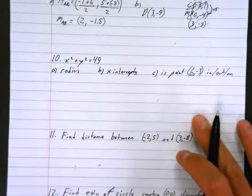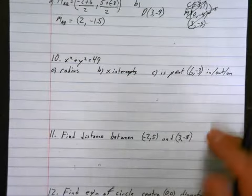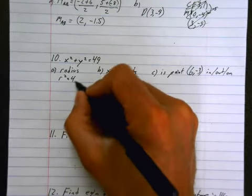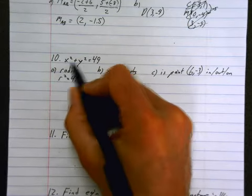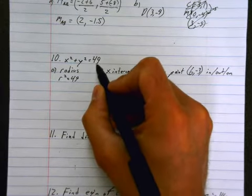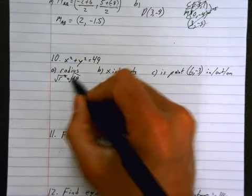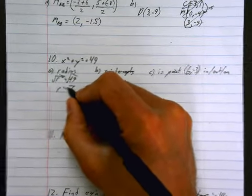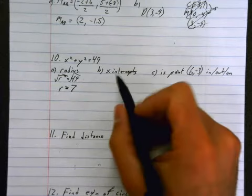Okay, question 10. Question 10, we have the equation of a circle and they want the radius. Now, the radius squared is equal to 49. Remember, x squared plus y squared equals r squared. So this is r squared, so you take the square root of both sides. I'm not worried here about the negative case because radius is always just positive. So if the radius is 7,